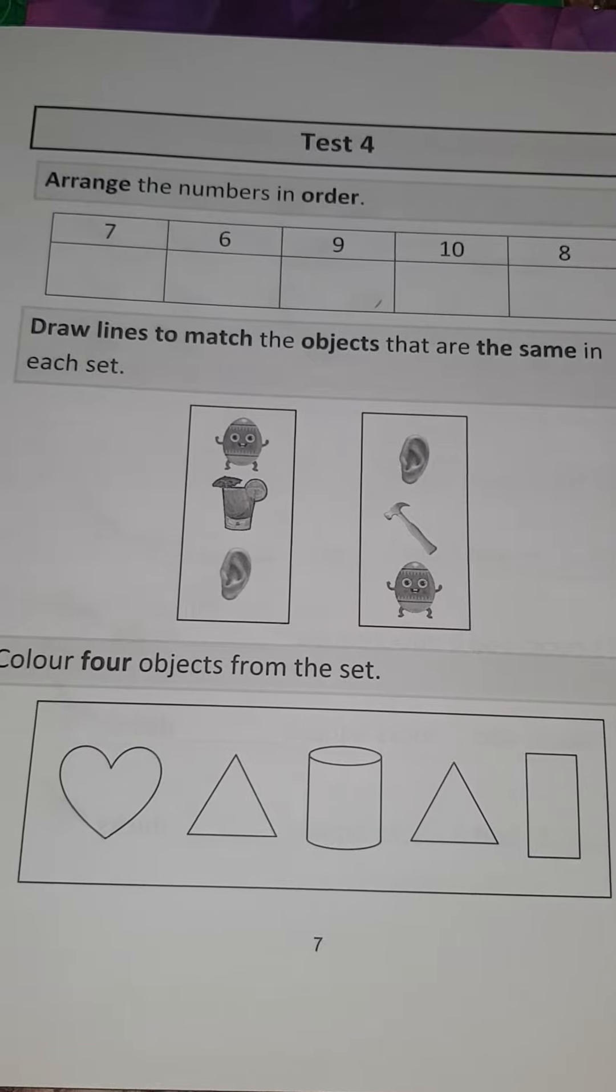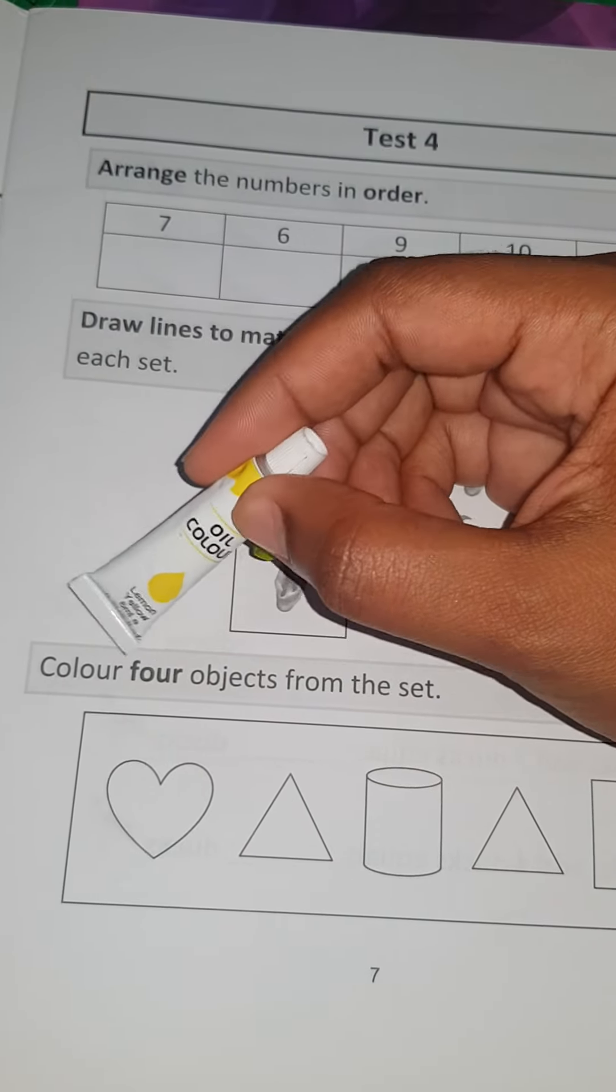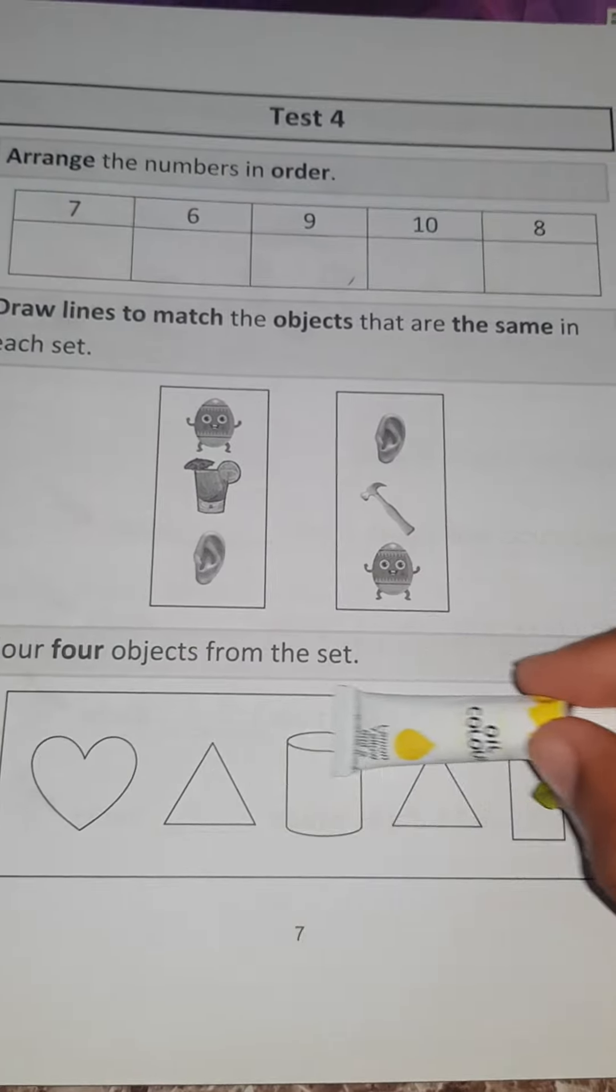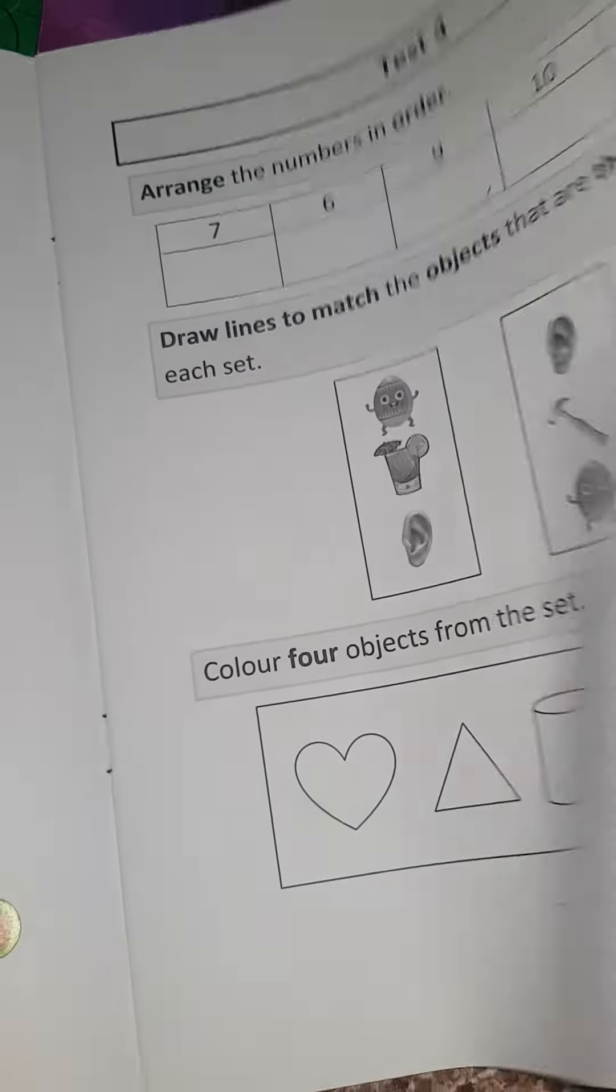You're coloring four objects. F-O-U-R, four. Color four objects from the set. So any four objects you want to color down here, make sure to count as you color. You do so. Now turn the page.